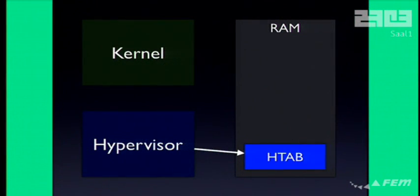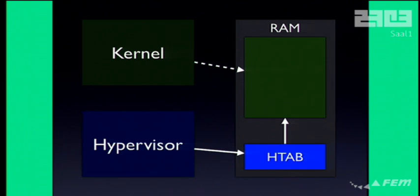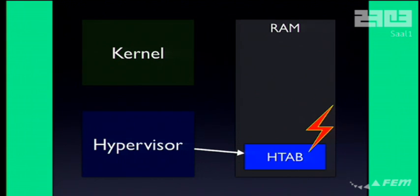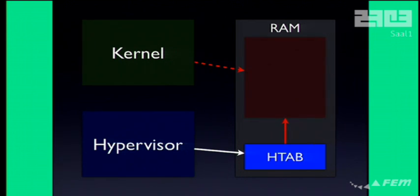The way this works is: the hypervisor and the kernel share the same chunk of memory, but the hypervisor controls the page tables to control memory access permissions for the kernel. When you allocate memory from the kernel, the hypervisor gives you a mapping to that memory. When you free that chunk, it deletes the mapping and you cannot access it anymore. Geohot glitched the memory bus right when that write happened, so even though the hypervisor thinks the memory is freed, the kernel still has a page entry that can access it. The hypervisor thinks it's free but you can still read and write from it, which is bad.